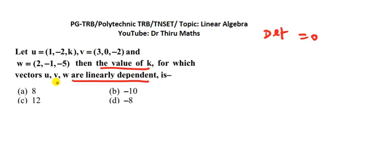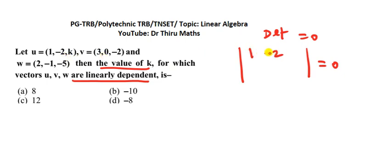u, v, w are vectors which are linearly dependent. The condition is that the determinant equals 0. Given vectors are linearly dependent, their determinant is equal to 0. If we write the vectors in determinant form and set it equal to 0, we can find the value of k. The model gives the value as minus 1 minus 5.